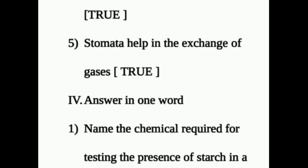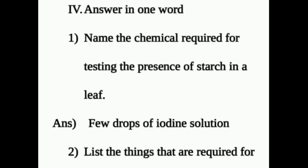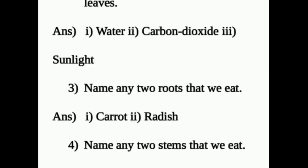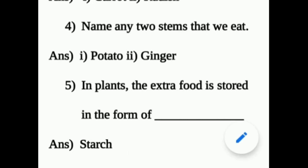Roman IV: Answer in one word. Question 1: Name the chemical required for testing the presence of starch in a leaf — answer: iodine solution. Question 2: List the things required for photosynthesis to occur in green leaves — answer: water, carbon dioxide, sunlight. Question 3: Name any two roots that we eat — answer: carrot, radish. Question 4: Name any two stems that we eat — answer: potato, ginger. Question 5: In plants the extra food is stored in the form of — answer: starch.